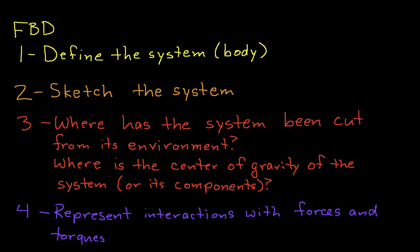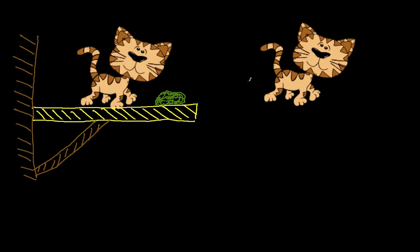Step number two is to sketch the system — basically the idea is to sketch the system in isolation. Rather than draw the cat myself, which would probably be ugly, I've just copied a picture of the cat to represent our sketch of the system. In our sketch, we're not including the beam, the brace, or the catnip — all we have is the system of interest, which is our cat. We're interested primarily in the shape of the system and not the internal workings, so we haven't drawn any parts of the skeleton or anything inside the cat.